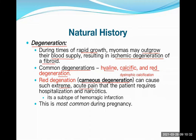Red degeneration involves acute bleeding in that area. Remember — fibroid is an encapsulated tumor with a capsule. When the mass rapidly increases in size because of internal bleeding, it causes a lot of pain. Red degeneration is very frequent during pregnancy, because the tumor rapidly grows during pregnancy and all these problems start.